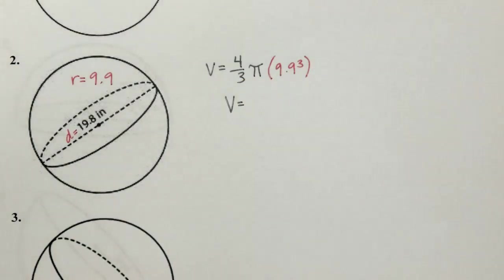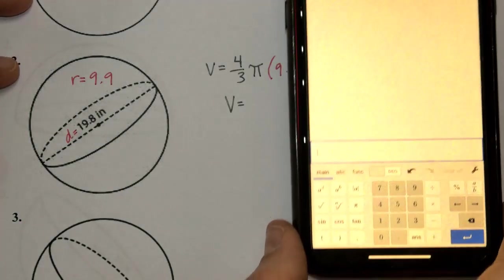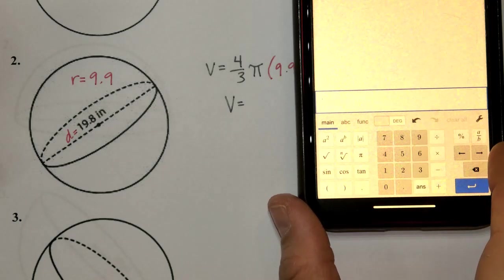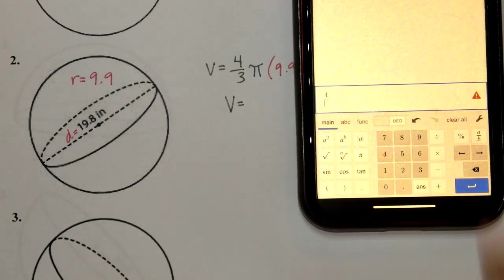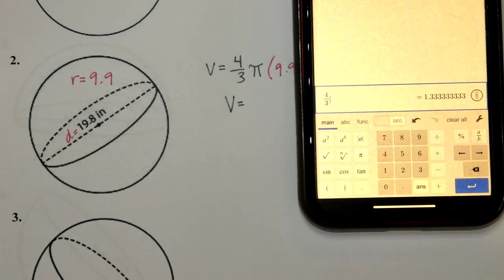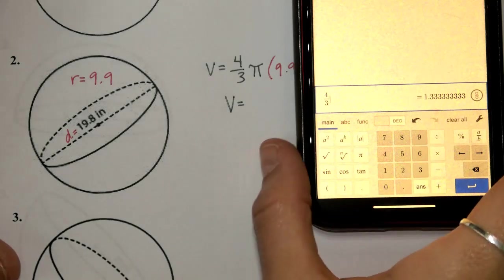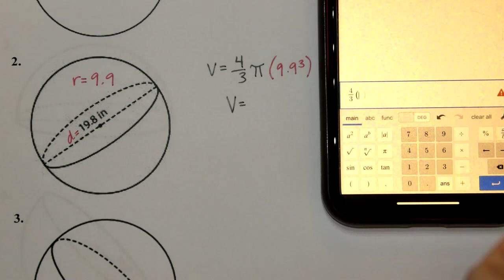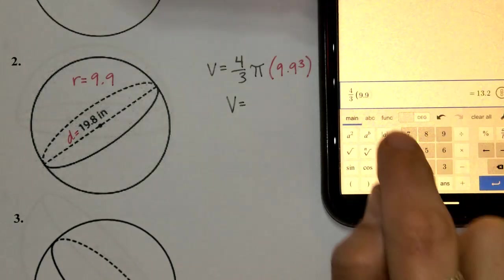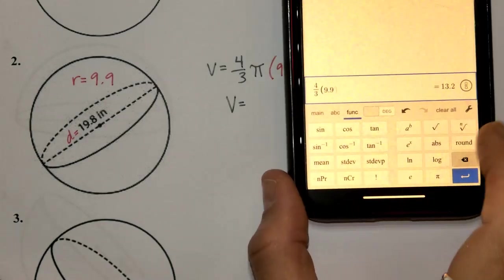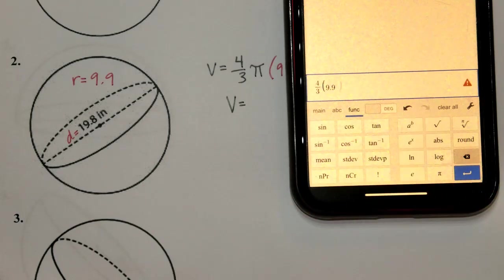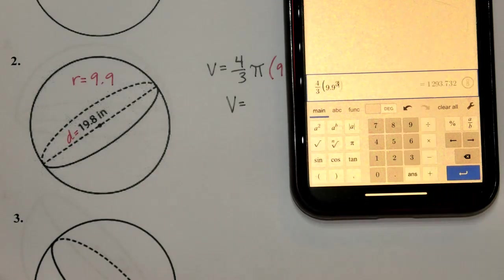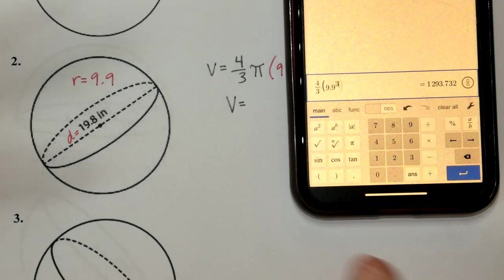On the Desmos calculator, to get the fraction press the a-over-b button under the wrench on the right. Put 4 on top, tap to the denominator and press 3. Use the arrow on the right to exit the fraction. Leave the pi out for now, open parentheses, enter 9.9, then go to the function button and select a-to-the-b power. Go back to main and type 3.